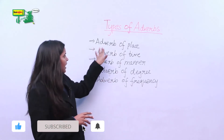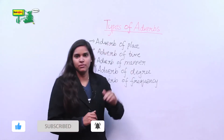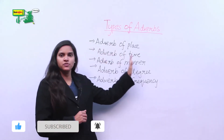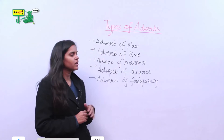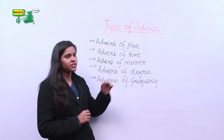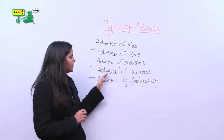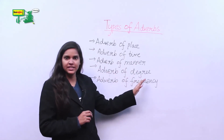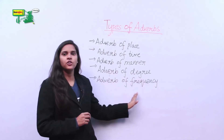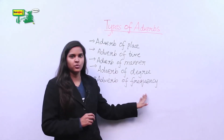The five types of adverbs are: adverb of place, adverb of time, adverb of manner, adverb of degree, and adverb of frequency.